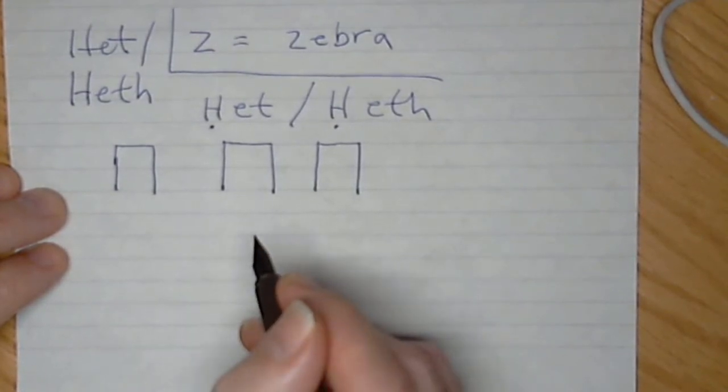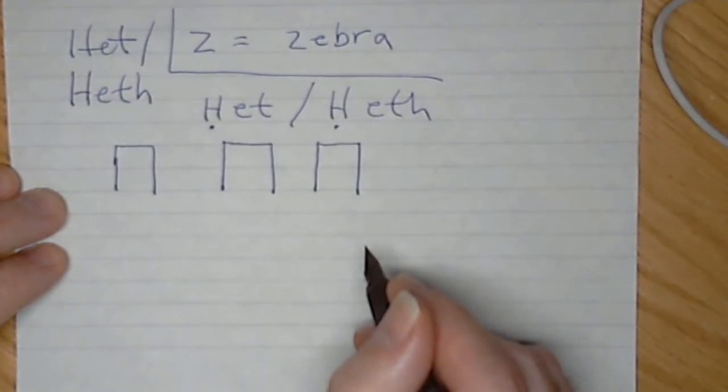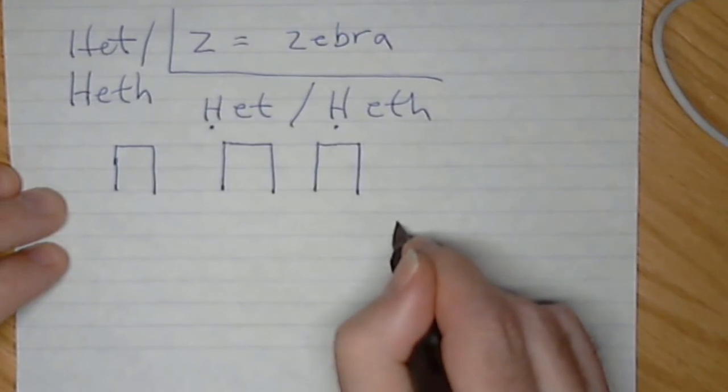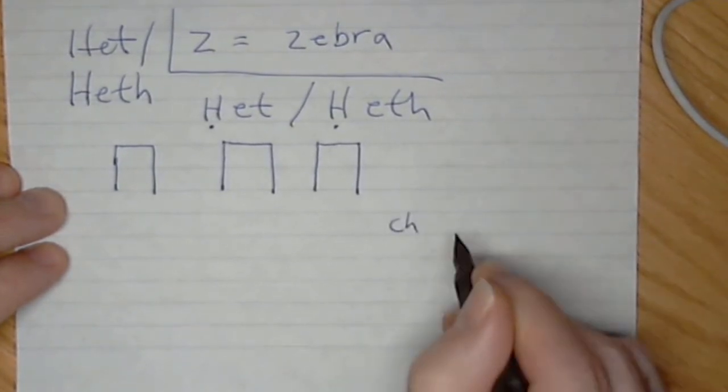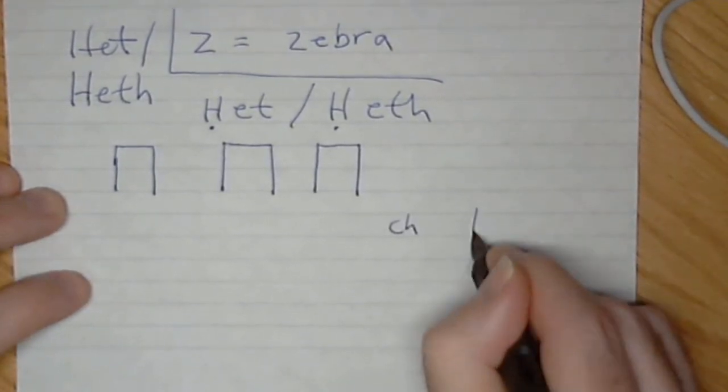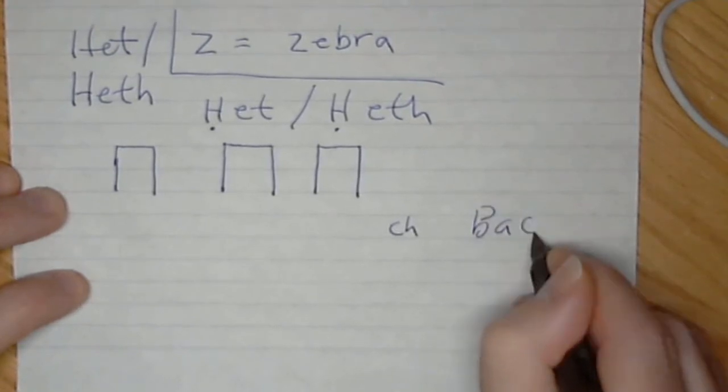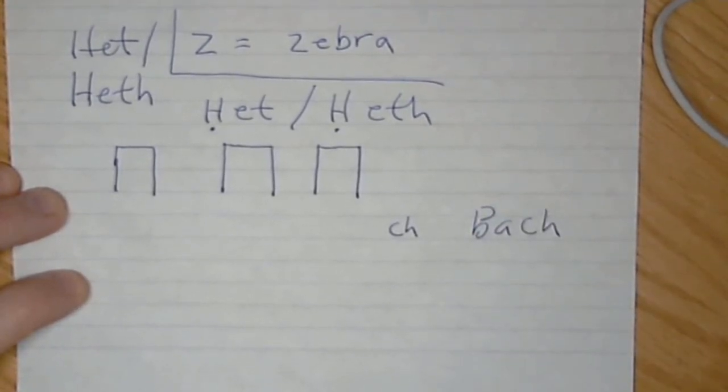And the HET is pronounced in the throat. Sometimes people will say CH, but it would be a hard CH, kind of like in the name Bach. And so it's a throat kind of sound, a HET.